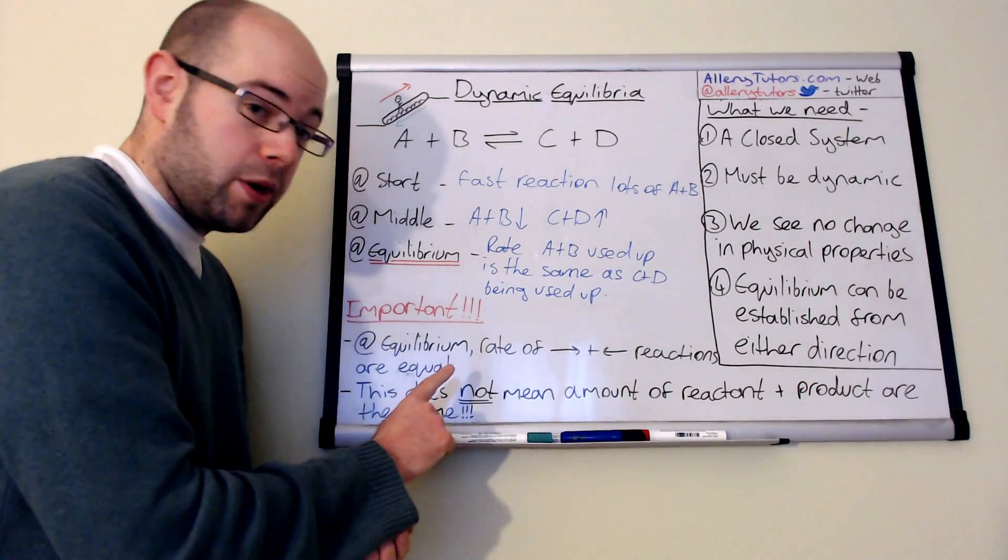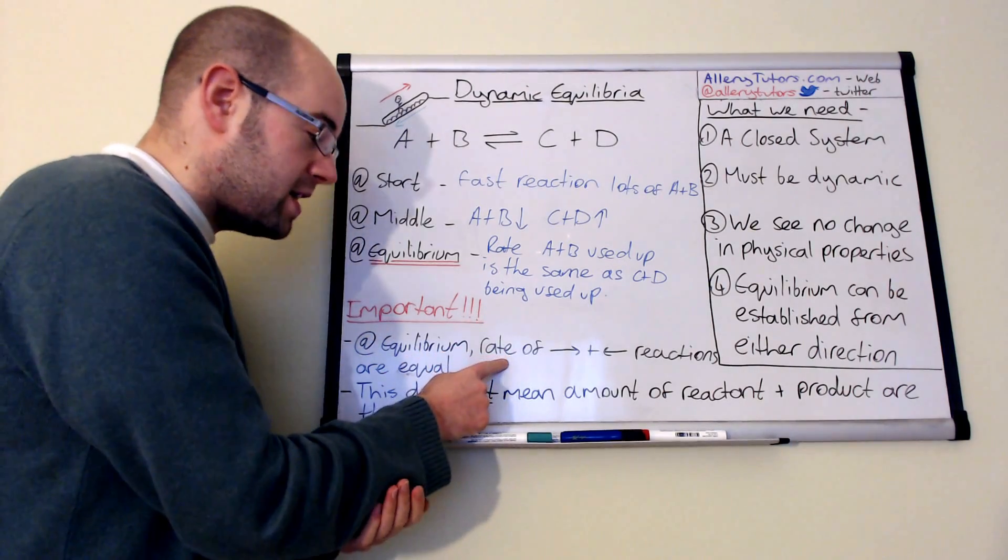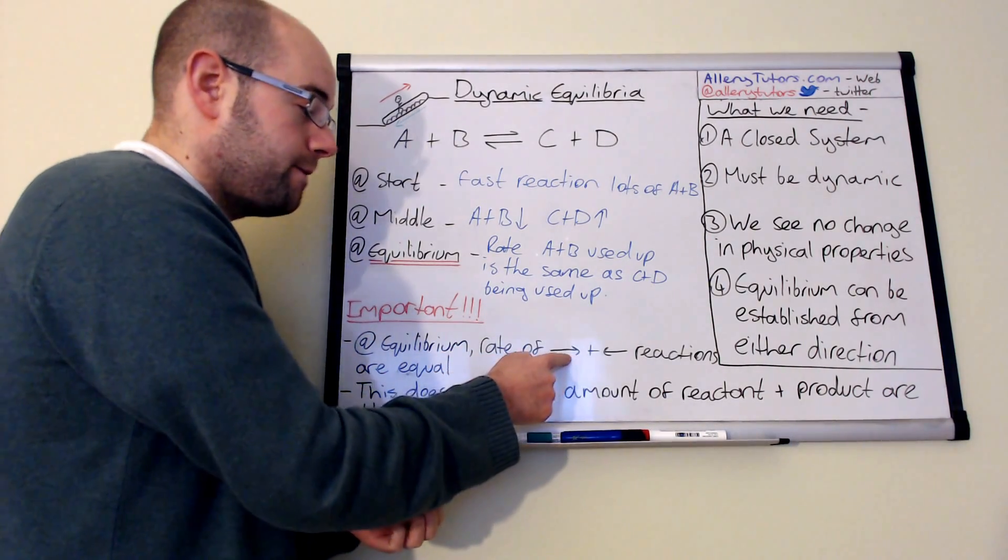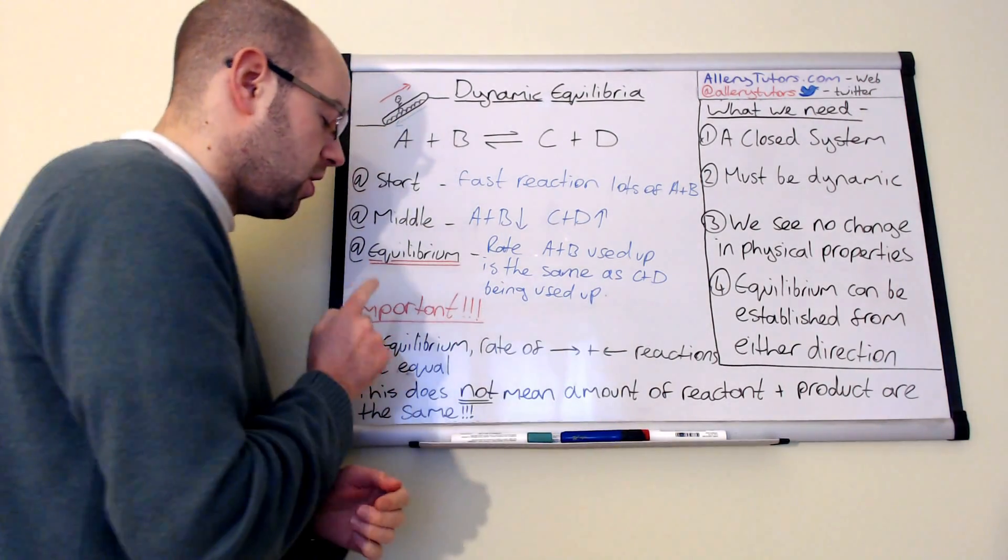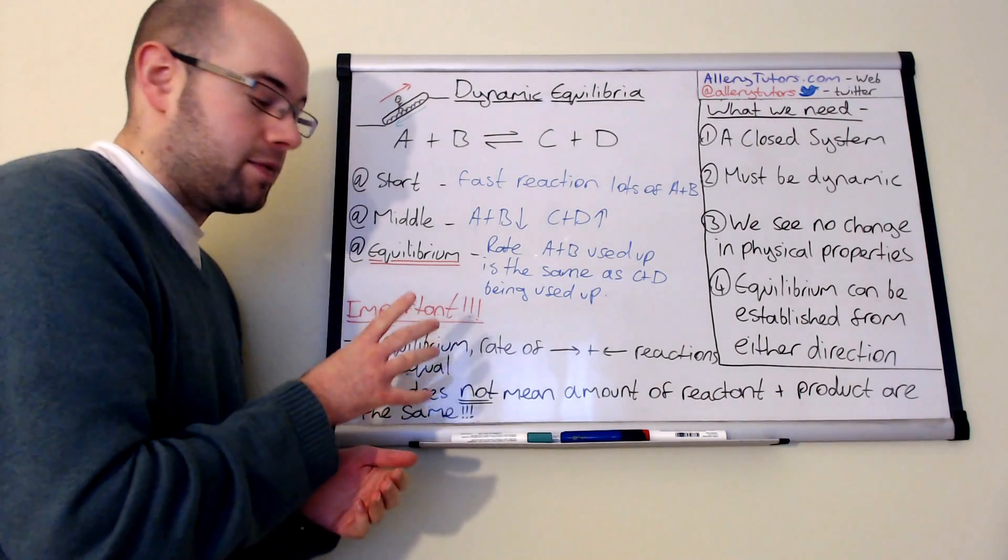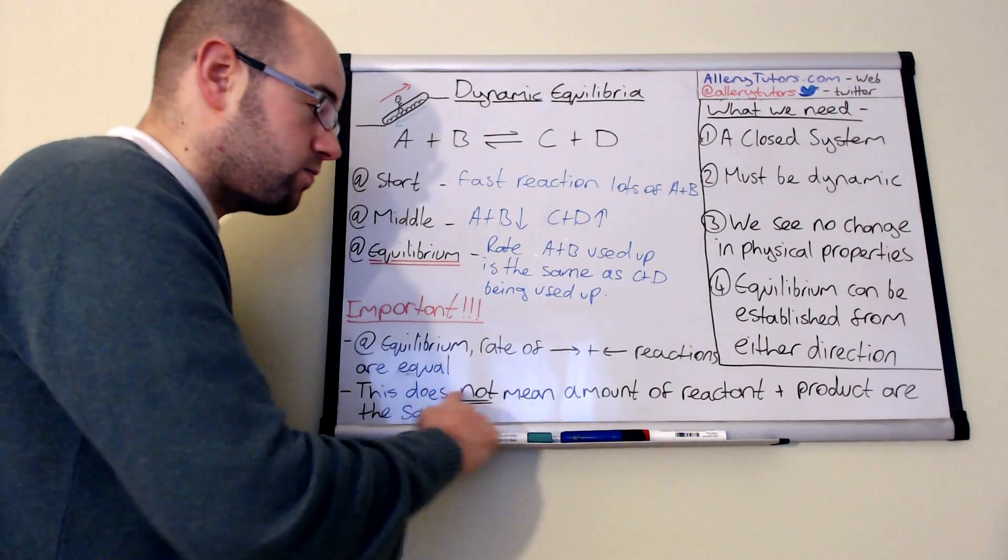Final point, important things. At equilibrium, the rates, and it's important as the rate, of the forward and the backward reaction are equal, but you don't have to have the same quantities. So that's really important.